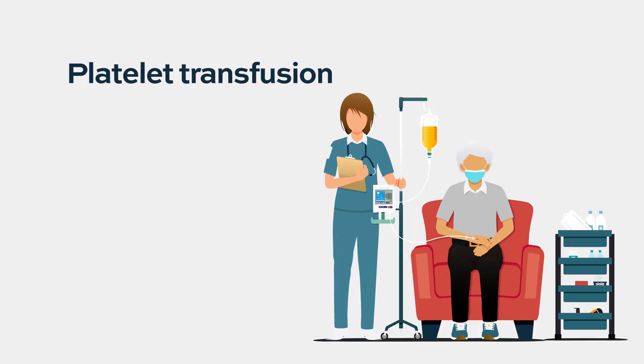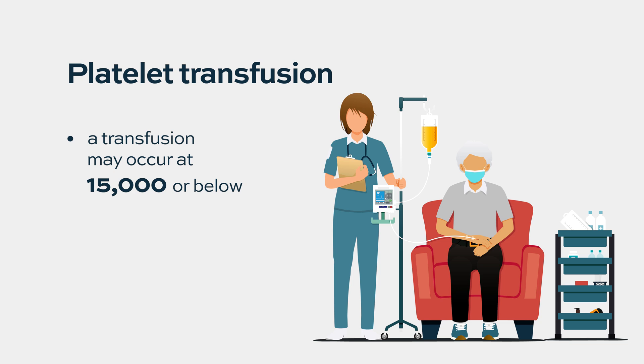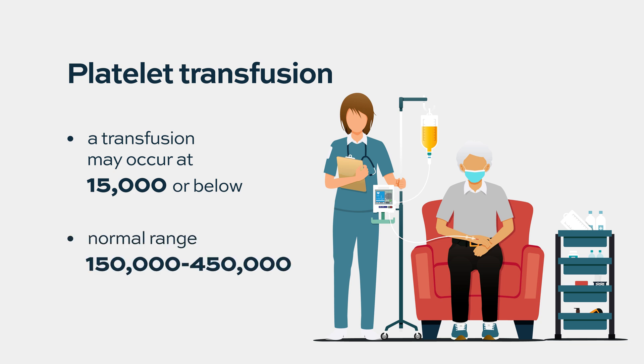We will transfuse platelets if they go very low, let's say below 15,000 to 10,000. A normal range is 150,000 to 450,000, so it's a long way from 150,000 to 10,000 or 15,000. This is one of the things we monitor very carefully on a daily basis during treatment.